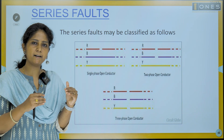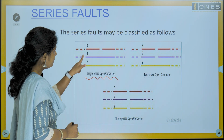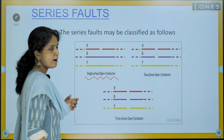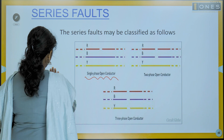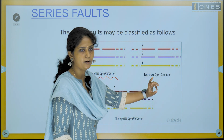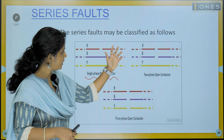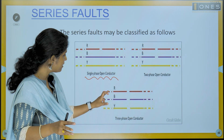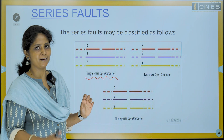In the first case it is a single-phase one conductor open fault. When one conductor breaks open, the load on that phase is shared by the other two phases, causing overload on them. The second fault is two-phase open conductor, where two conductors break open. And the third is three-phase open conductor, where all three conductors break open. These are all open conductor faults.